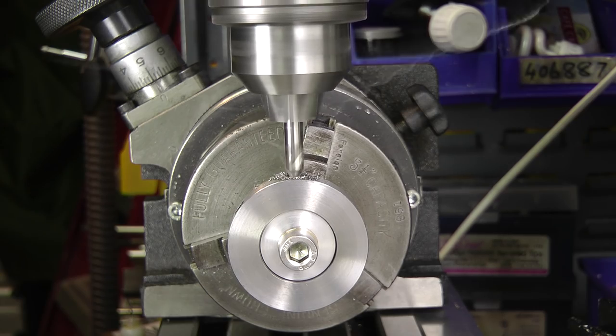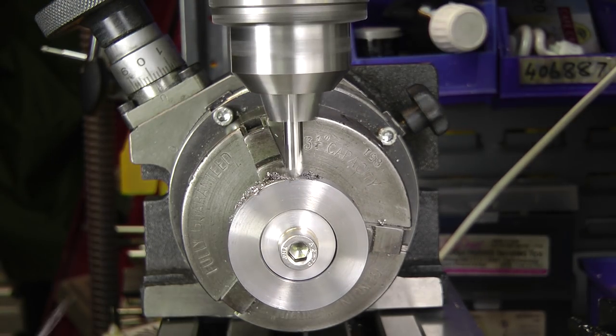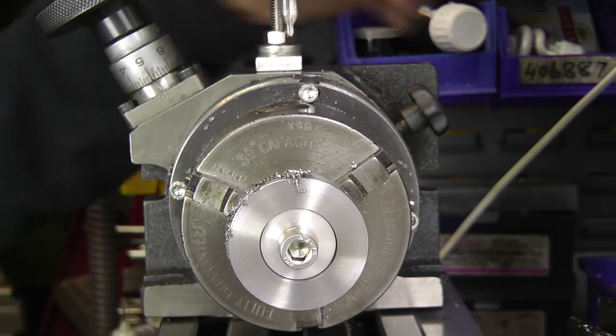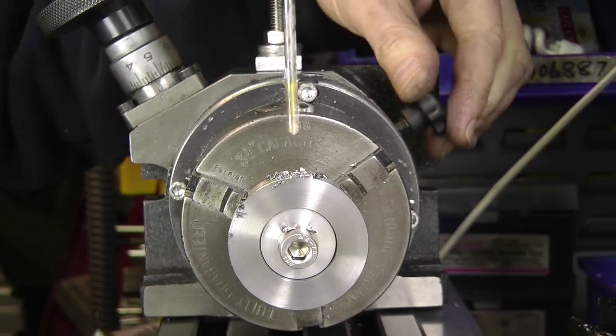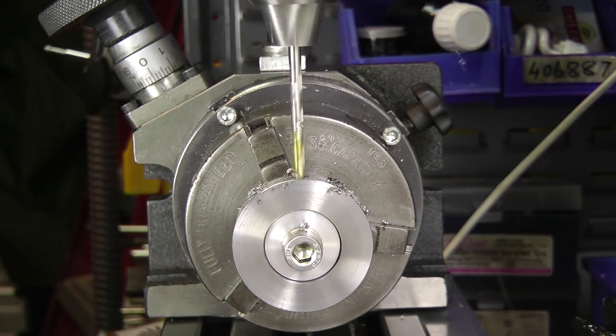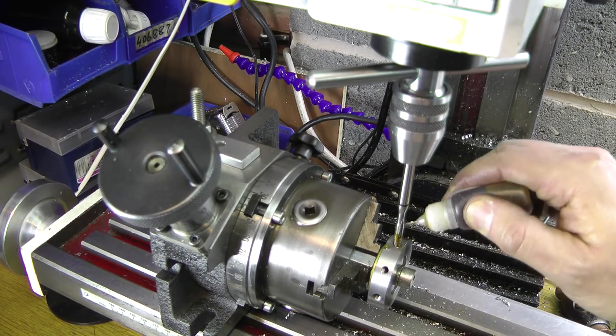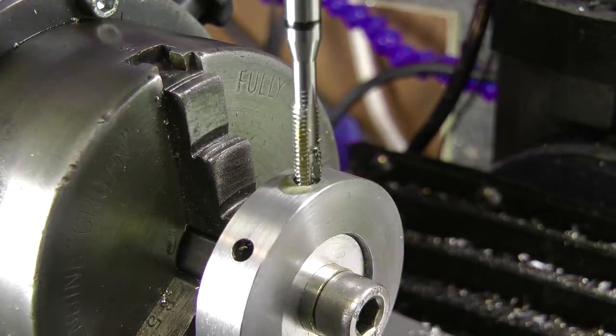I mounted the part and drilled 4.2mm holes ready to tap M5. Looking back at this footage, I think a machinist jack wouldn't have gone amiss to help with the flex on my little rotary table. Once the holes were drilled I went round again with a tap.